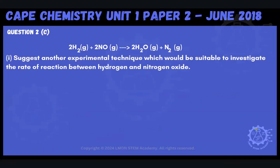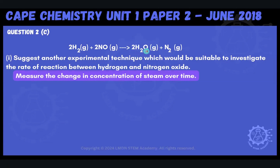Moving on to part 2C, part 1 says suggest another experimental technique suitable to investigate the rate of reaction between hydrogen and nitrogen oxide. In the current setup, what was being measured was the rate of production of nitrogen. One alternative we could use is to measure the change in concentration of steam over time, since that's also a product — tracking that concentration and how it changes over time can also provide a rate for us.